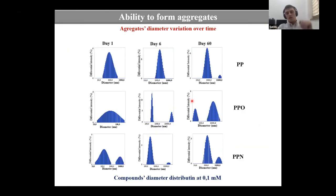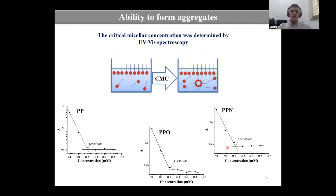The aggregation effect was confirmed by DLS technique. We did this in time during 60 days and as you can see the smallest aggregates we obtained for compound PPO but the most stable aggregates were obtained for compound PPN. We also determined the critical micellar concentration using UV-Vis spectroscopy and this concentration is around 0.7 and 0.9 micromolar.